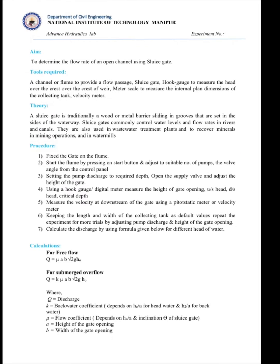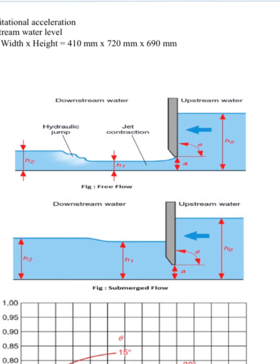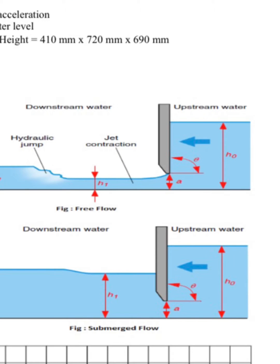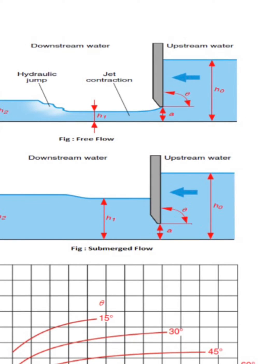In this experiment, we have two types of flow: free flow and submerged flow. The flow is called free flow when the height of gate opening (a) is higher than the critical depth (hc). It is called submerged flow when the critical depth is higher than the height of gate opening.